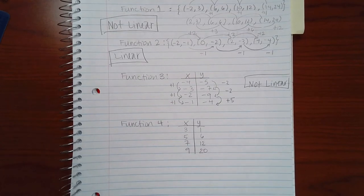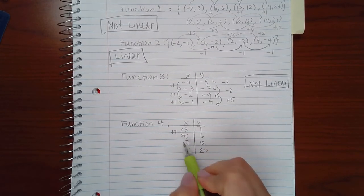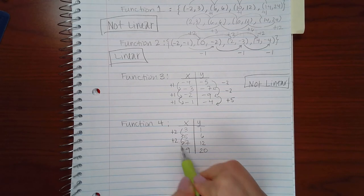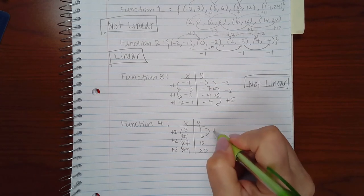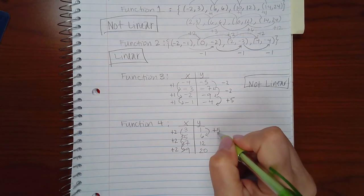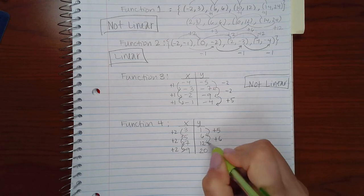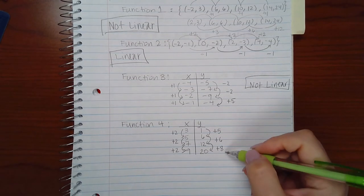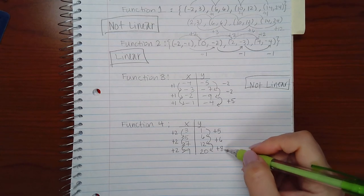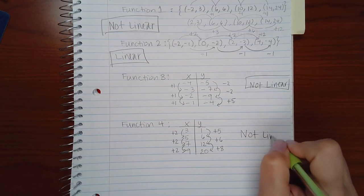For the third function: the x-values increase by 2, 2, and 2 — so x-values are good. But for the y-values, from the first to the second I'd add 5, the second to the third I'd add 6, and the third to the fourth I'd add 8. These are not the same value increasing each time, so this one is also not linear.